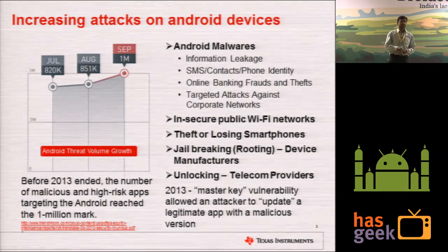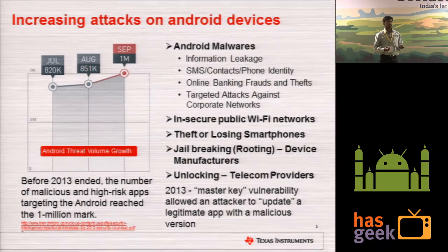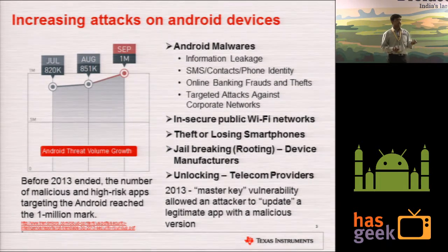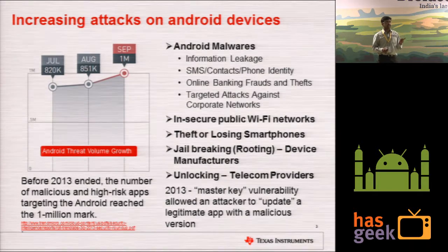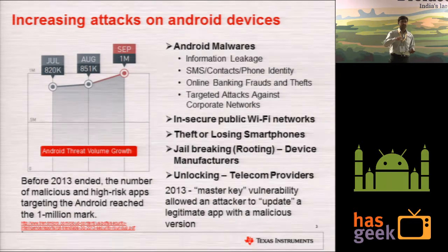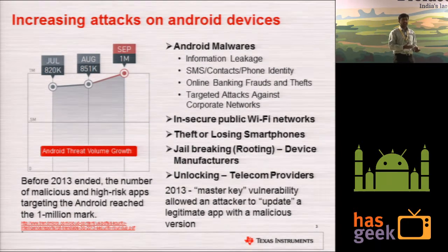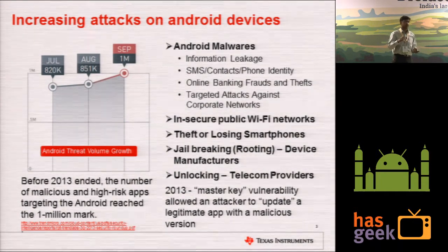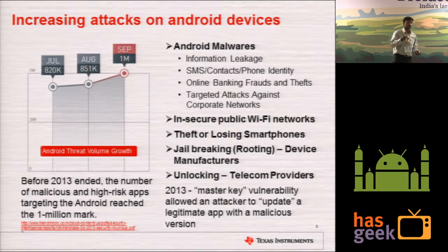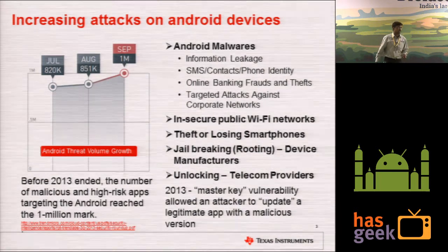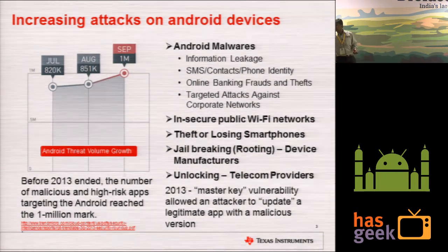In 2013, a major highlight was the master key vulnerability, discovered by a company called Blue Box. They proved that 99% of Android phones existing today can be attacked with this vulnerability. Almost all apps — what this exactly means is that you can install an updated version of a legitimate application with malicious content inside.